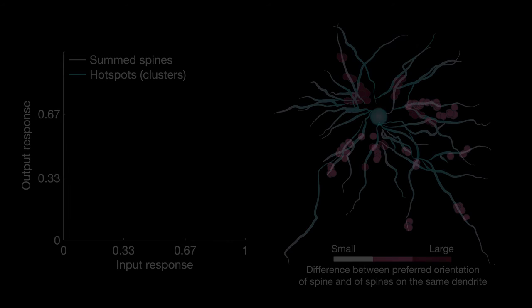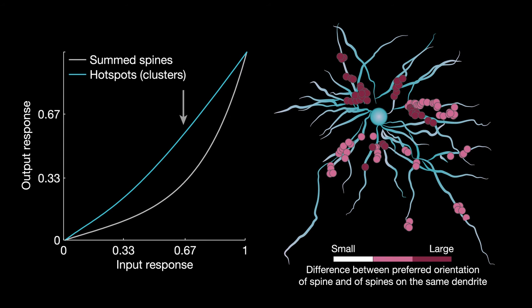As a result, the properties of the clustered inputs had a much stronger influence on the neuron's overall orientation preference and selectivity. The non-clustered, non-amplified inputs tuned to non-preferred orientations were filtered out.